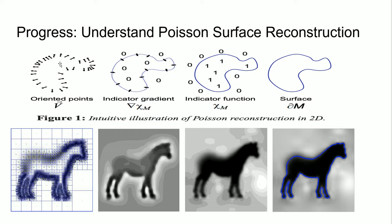In the paper it was written that from there we take the gradient of the set of points to get the indicator gradient, then we get the indicator function, and then we use an algorithm such as marching cubes to extract the ISO surface to get the full 3D mesh surface.